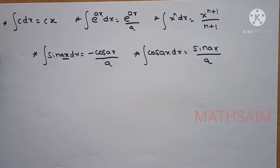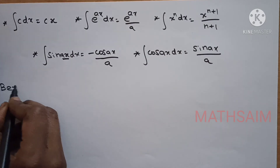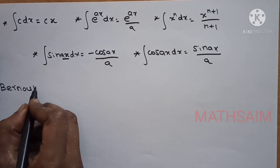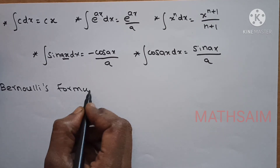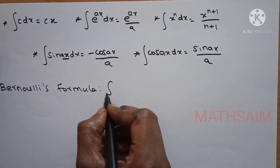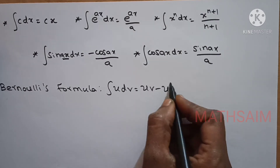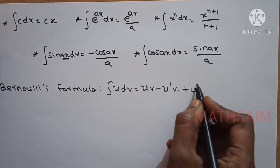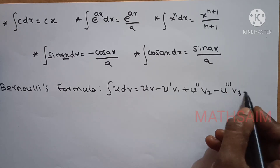And then, now we've learned the Bernoulli formula. The Bernoulli formula is already studied in school — it is the integration by parts formula. We've learned the extension of it. So, Bernoulli formula is for integration. What is that? Integral u dv is equal to uv minus u'v1 plus u''v2 minus u'''v3, and so on.